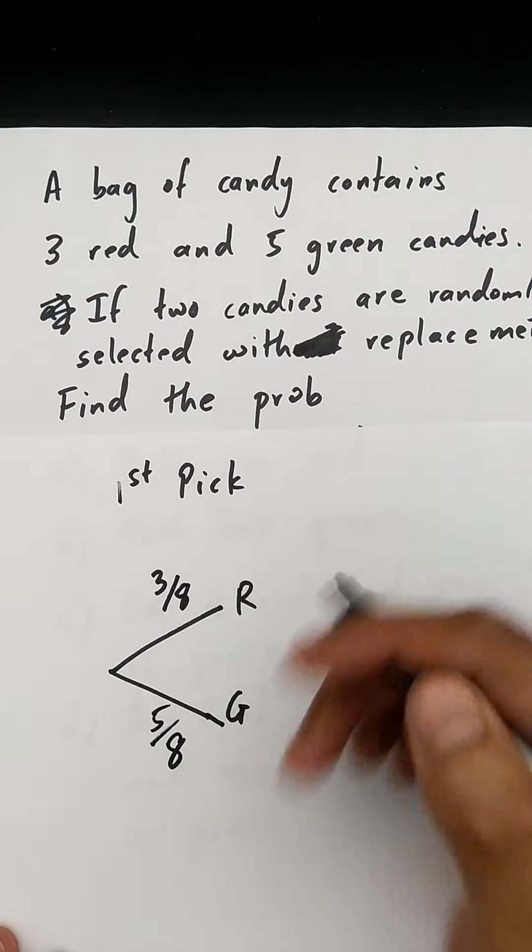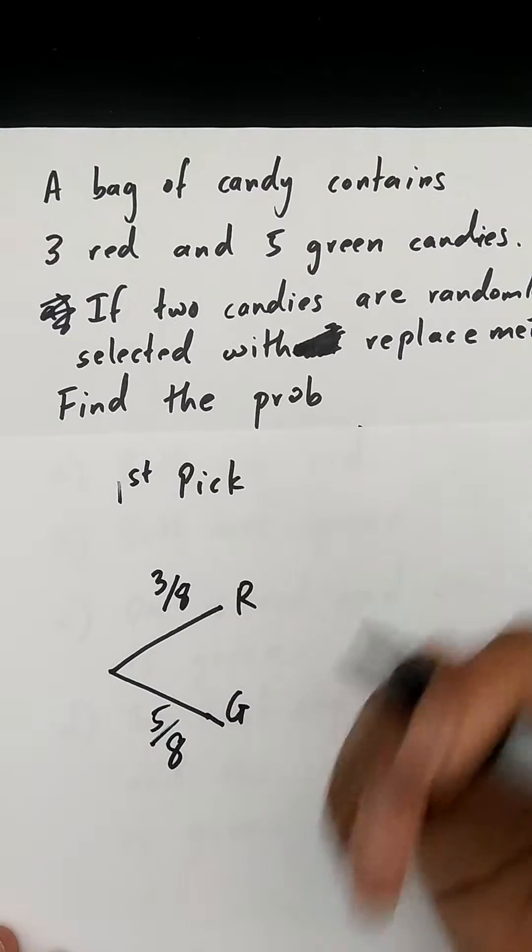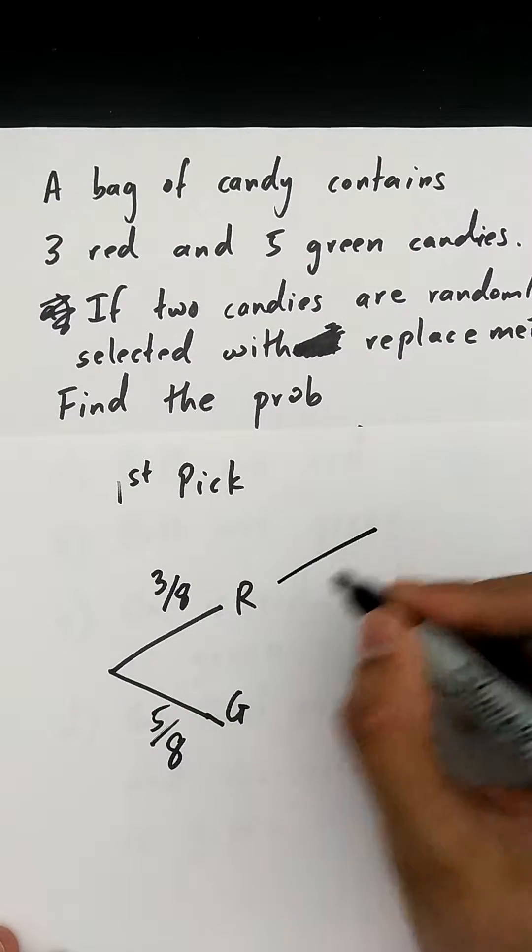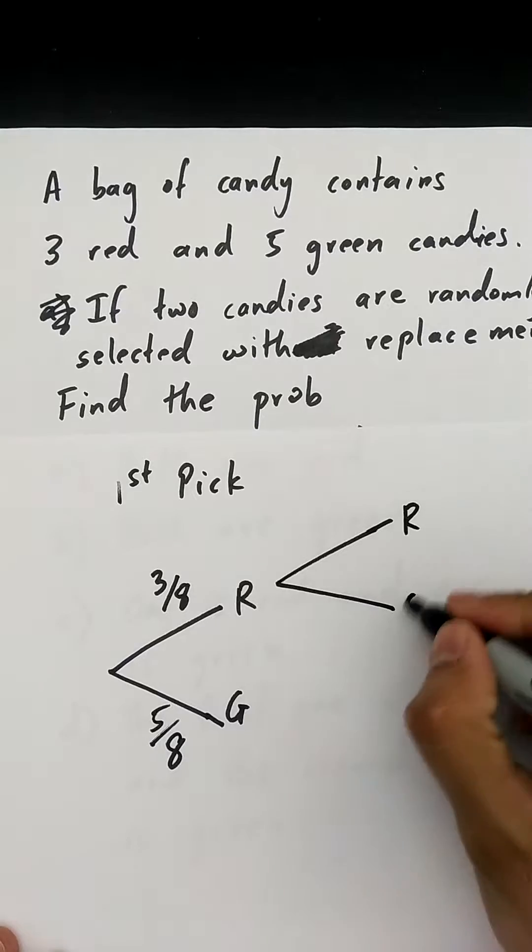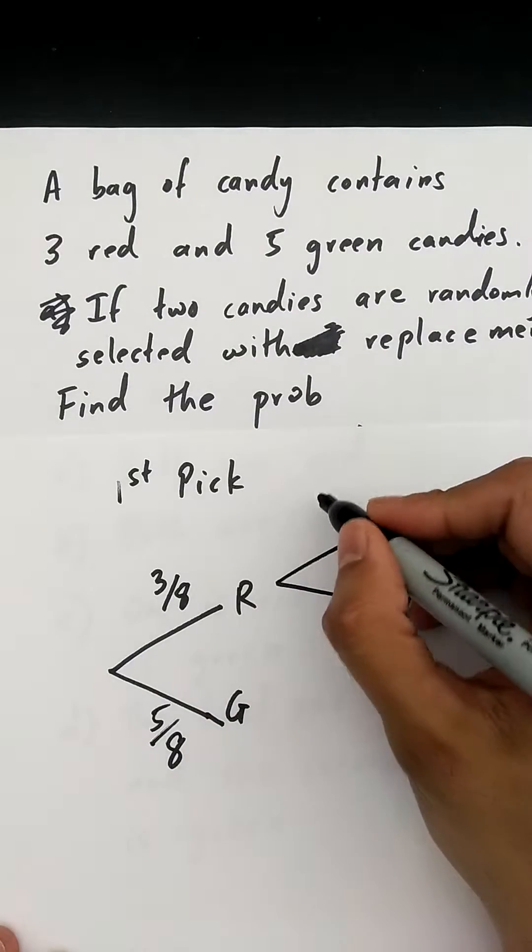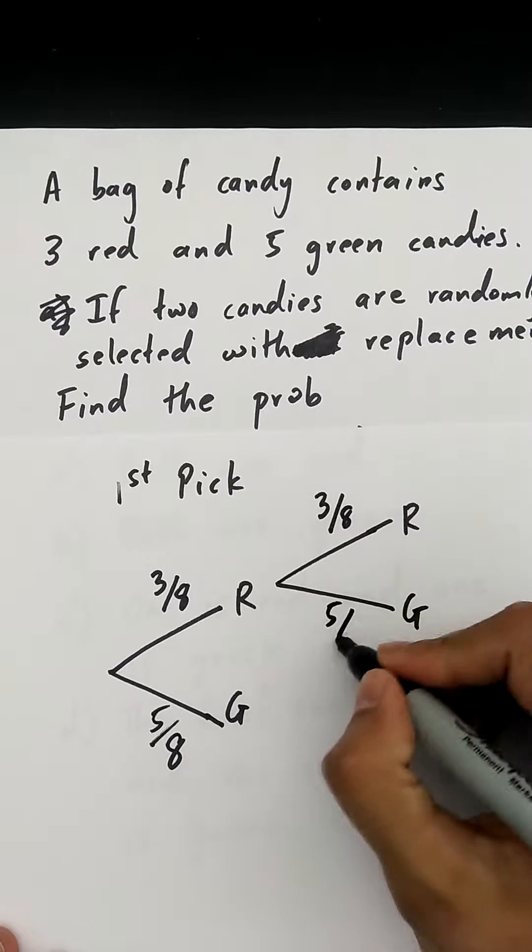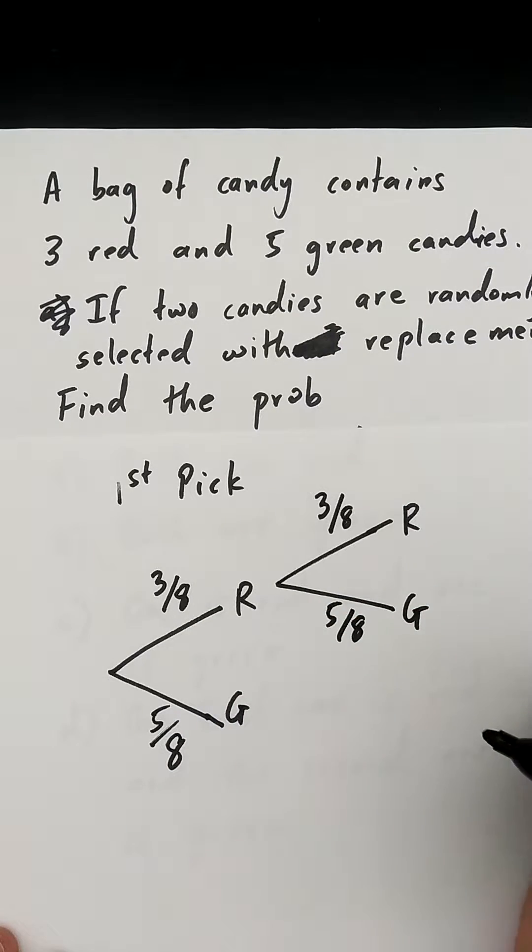But since this is with replacement, once you make the first pick, you're going to put whatever candy you picked back into the bag. So basically when you do your second pick, if you pick a red one, you're going to put the red one back in the bag, so you still have all your red ones left, still have all your green ones.